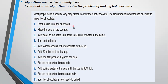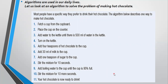Step one: fetch a cup from the cupboard and place it on the counter. Add water to the kettle until there is 500 ml of water, then turn on the kettle. Add four teaspoons of hot chocolate to the cup, add 30 ml milk, add one teaspoon sugar, stir for 10 seconds. Add boiling water until the cup is 95% full, stir for 10 more seconds, and your hot chocolate is ready to drink.